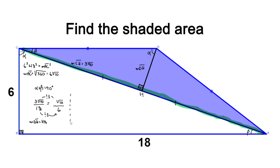To find the area, we take the base of our triangle — segment AC, which is 6 times the square root of 10 — multiplied by the height of our triangle, segment DH, which is the square root of 10, all divided by 2. Six divided by 2 is 3; the square root of 10 times the square root of 10 gives 10; and 3 times 10 is 30. So the area of our blue triangle is 30 units squared.